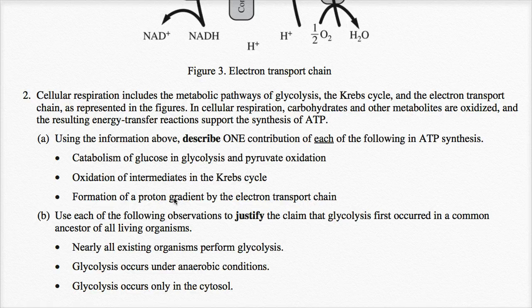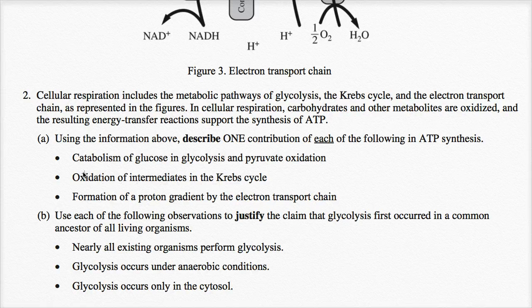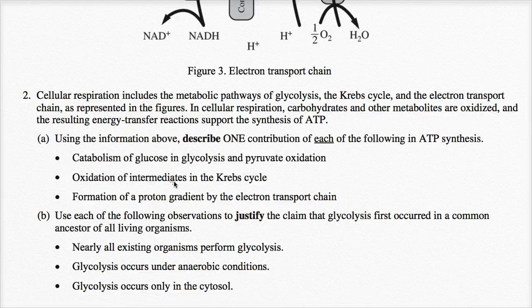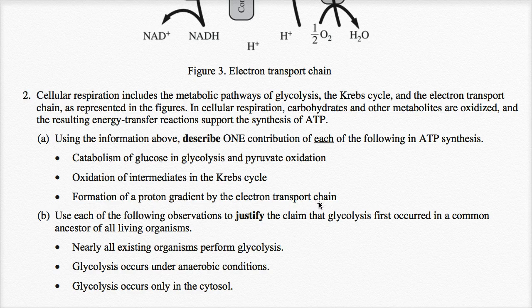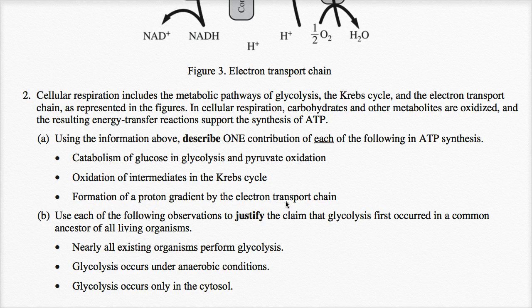Now, each of these statements seem kind of intimidating, but they're really just saying describe how glycolysis and pyruvate oxidation contribute to ATP synthesis. Describe how the Krebs cycle contributes. And then the formation of the proton gradient by the electron transport chain. Well, that's what the electron transport chain does. It takes high energy electrons from NADH or FADH2, and as those high energy electrons go to lower and lower energy states, it's pumping these hydrogen protons across the membrane, and when they come back in, that's used to synthesize ATP.